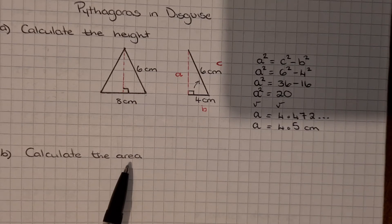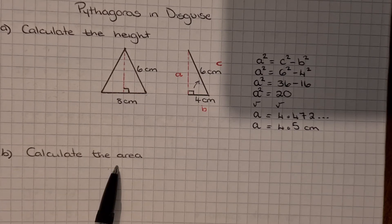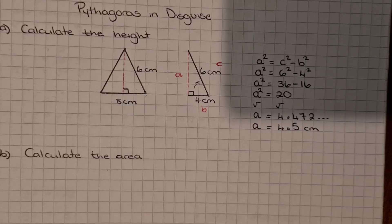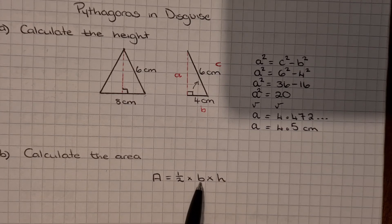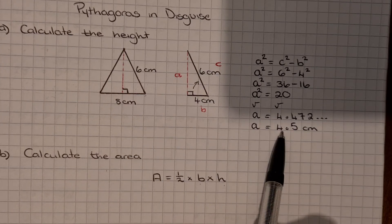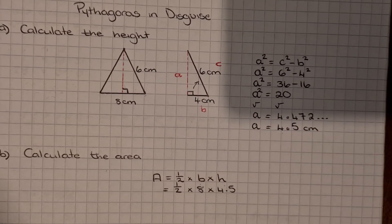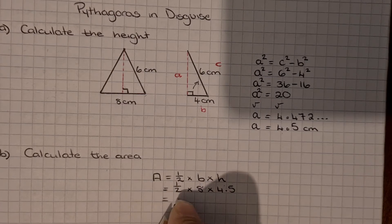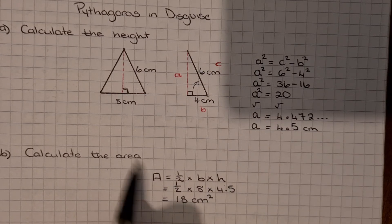Part B is slightly different — we don't need Pythagoras for part B. It's asking us to calculate the area of the triangle, so you need to remember your area of a triangle formula: half times base times height. We know the base of the triangle is 8, and we now know the height is 4.5 because we just worked it out. So: half times 8 times 4.5 gives us 18 centimetres squared, because it's an area.